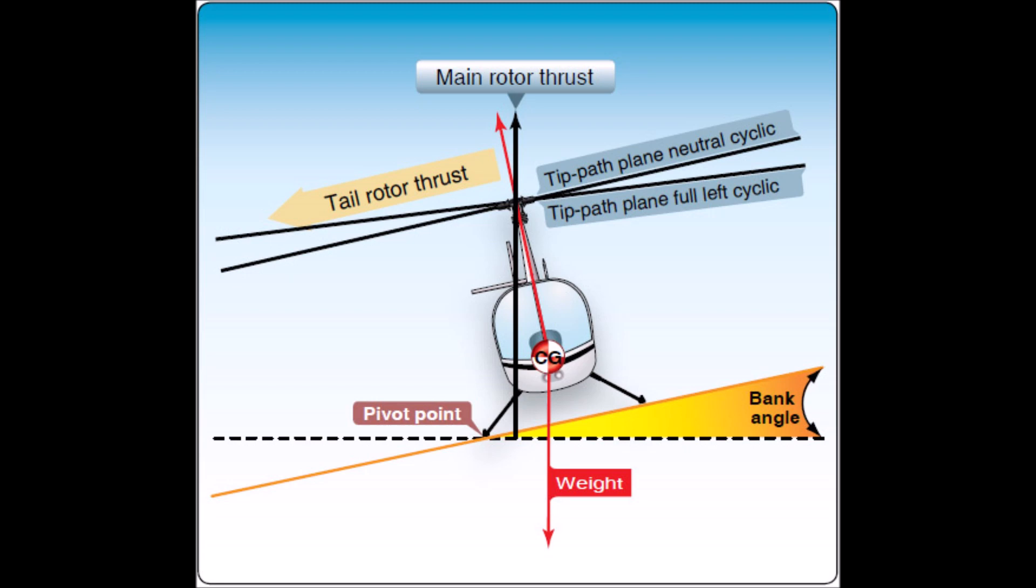If the tilt or roll of the helicopter exceeds that range, usually around 5 to 8 degrees in general aviation aircraft, the controls, the cyclic, can no longer command a vertical lift component, and the thrust or lift becomes a lateral force that rolls the helicopter over.